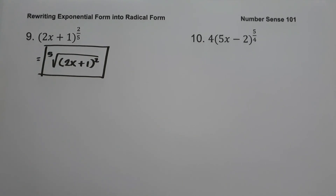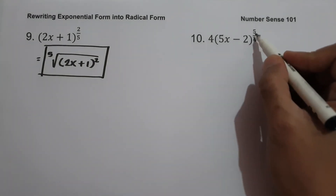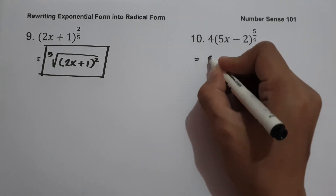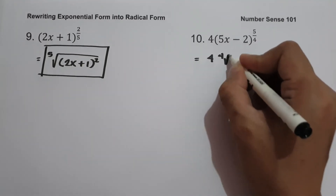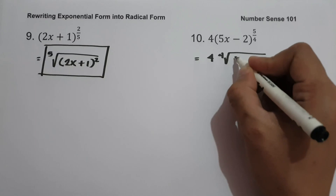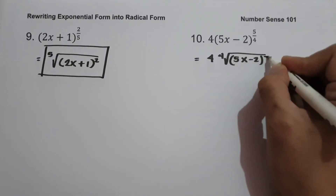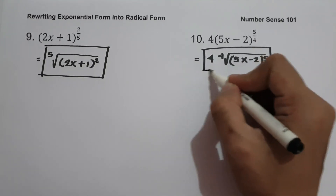On our last example: 4 times quantity 5x minus 2 raised to 5 over 4. Since 4 is not being raised by 5 over 4, we write this as 4 times the 4th root of 5x minus 2 raised to 5. And this will be our answer.